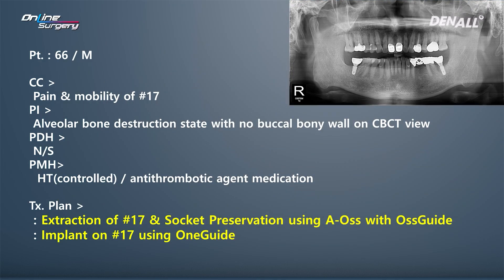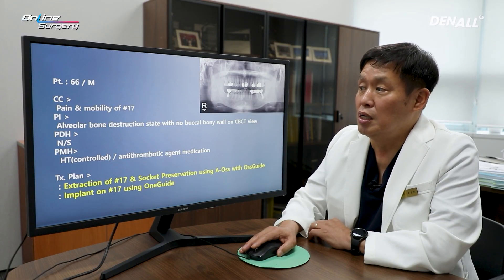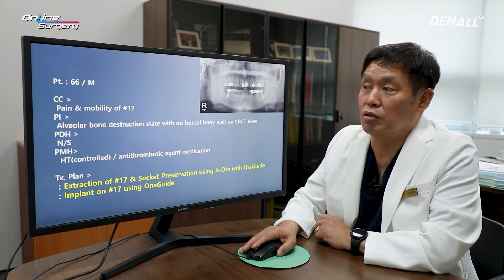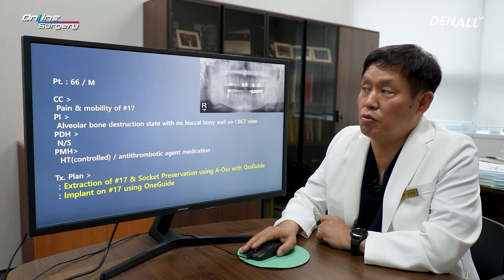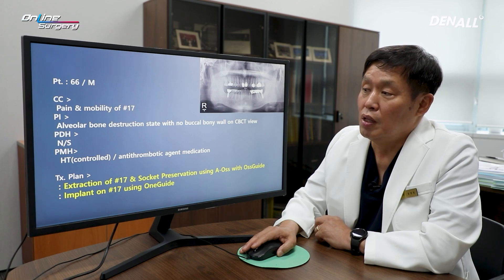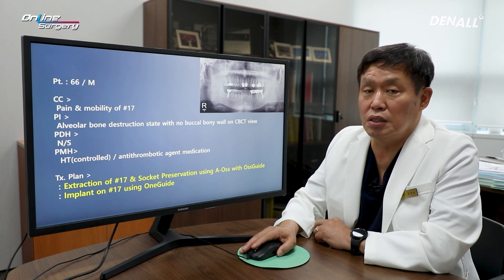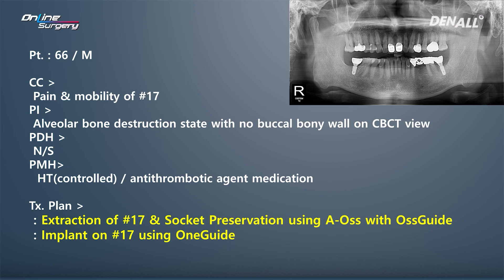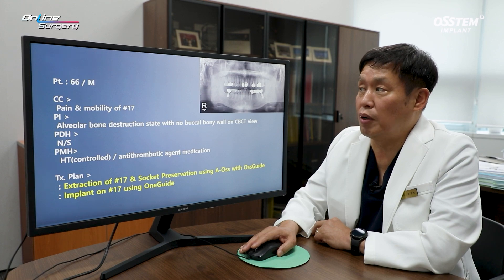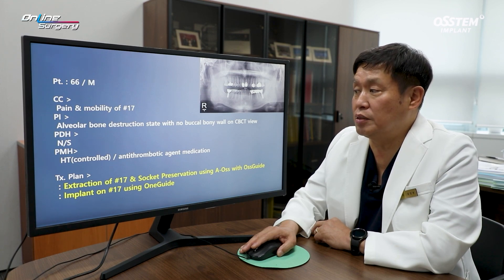Looking at CBCT, in number 17, there is significant alveolar bone destruction. The buccal bony wall was almost gone. In terms of dental history, there's nothing else to note. The patient had controlled hypertension and was taking an anti-thrombotic agent. There were no major issues, and we did not ask the patient to stop drug intake.